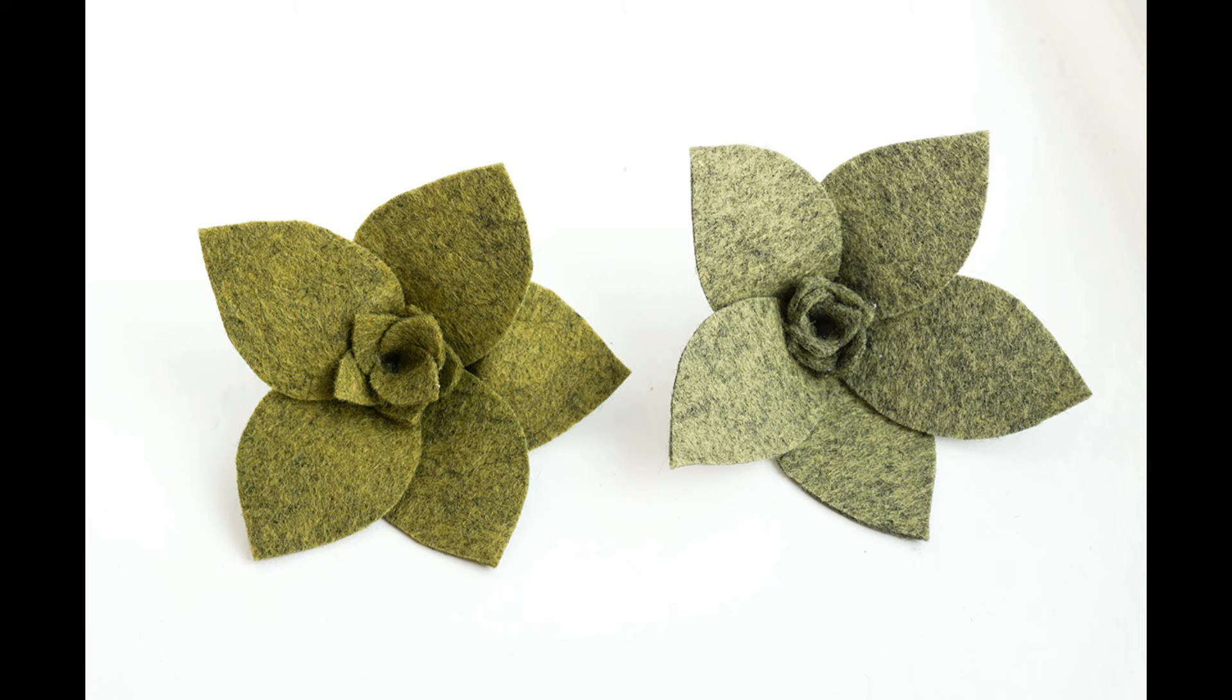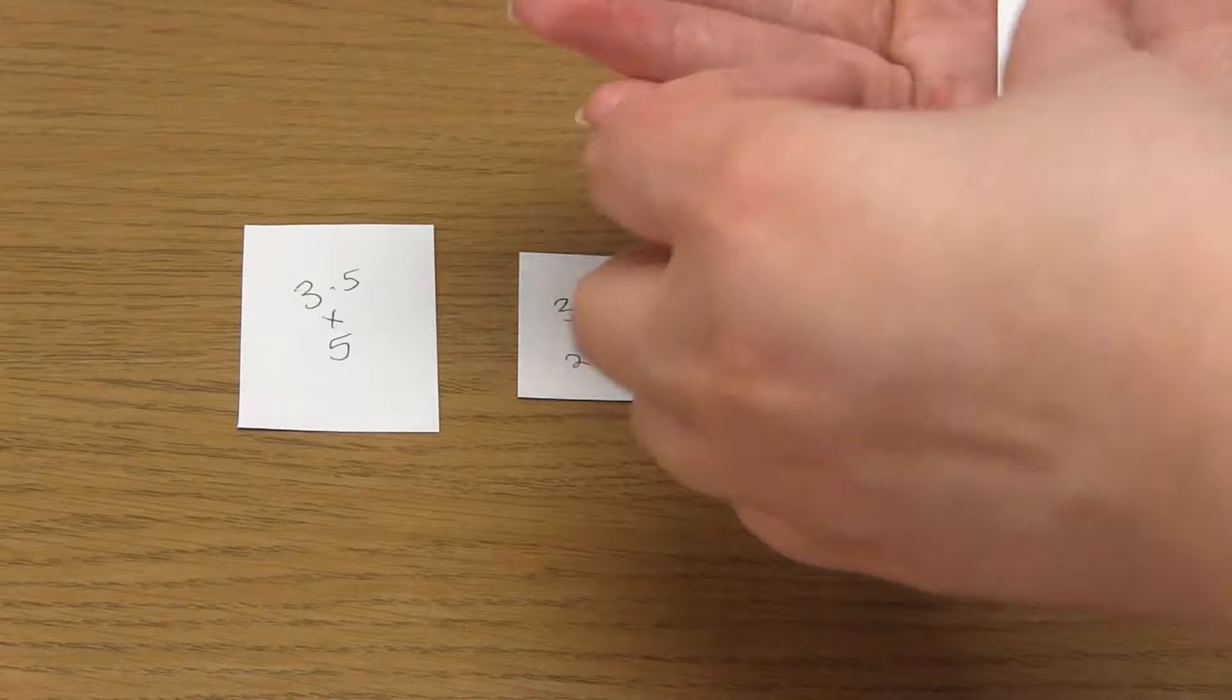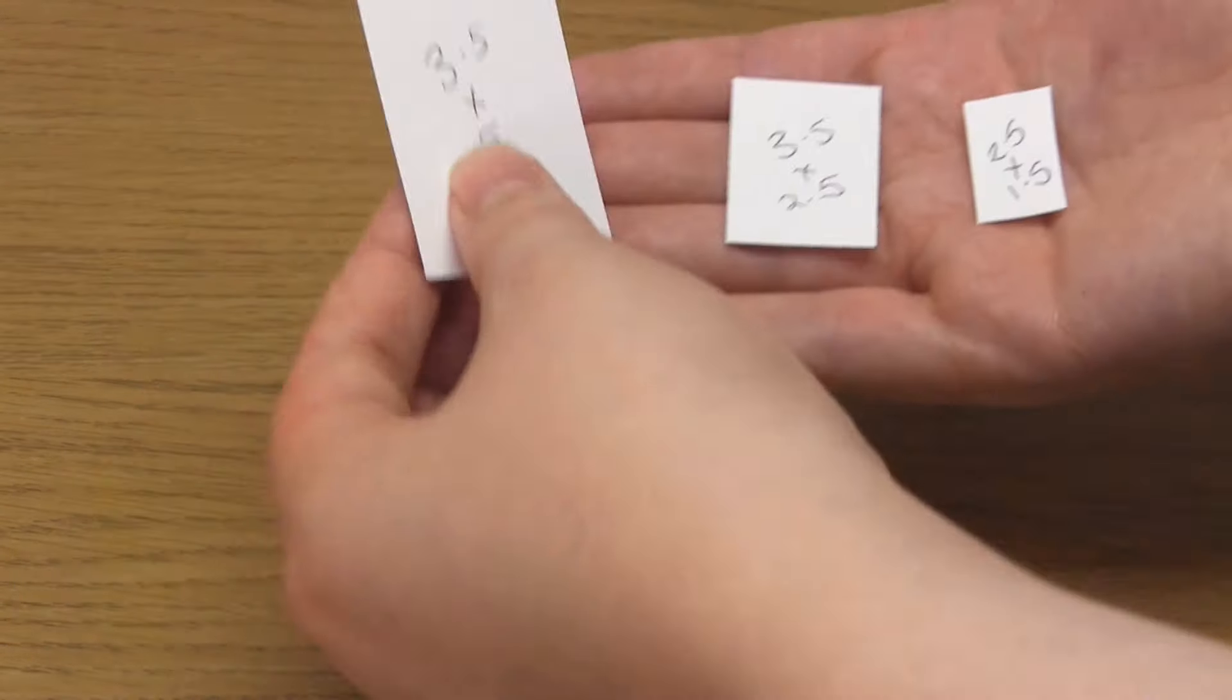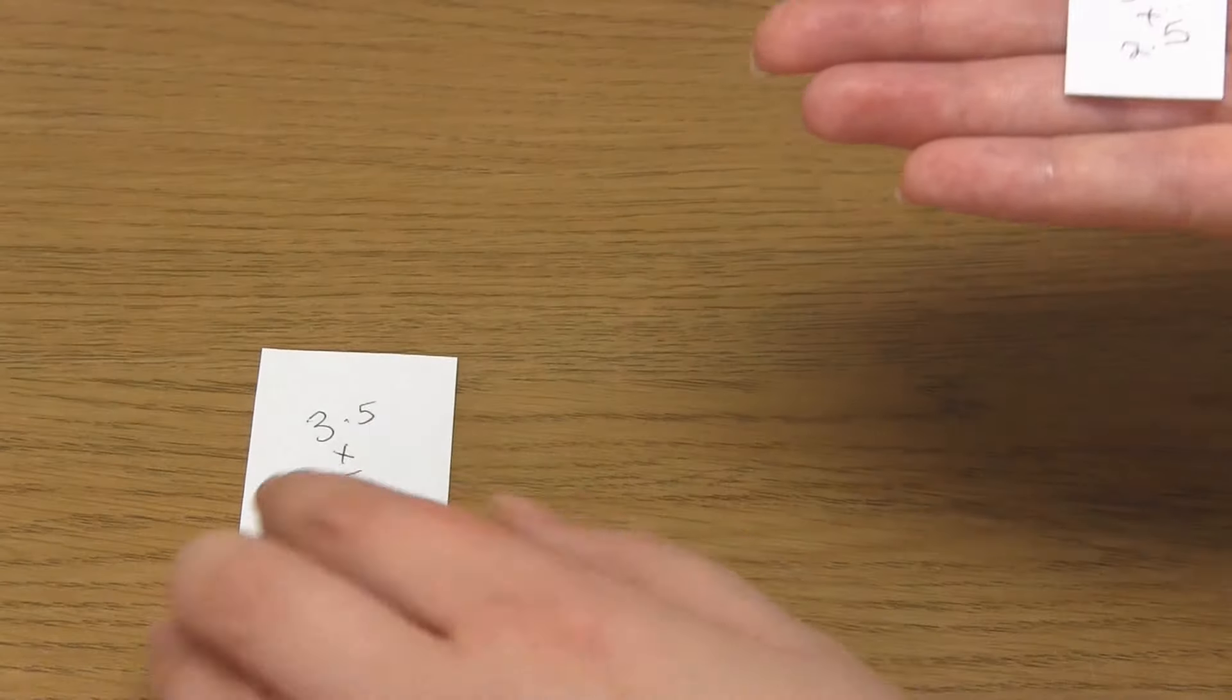For the next design, it's very similar to the previous one, but you're going to need paper rectangles measuring 5x3.5, 3.5x2.5 and 2.5x1.5cm.